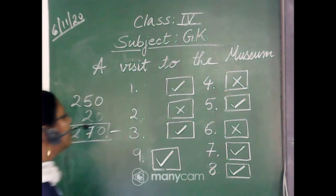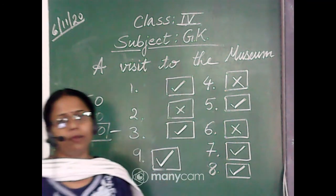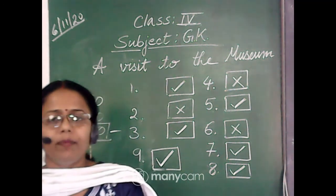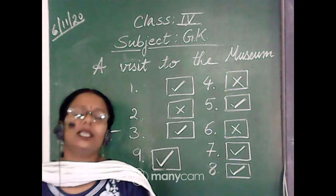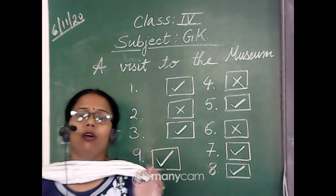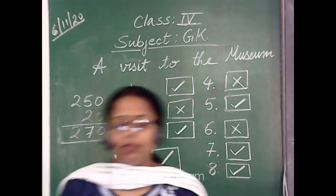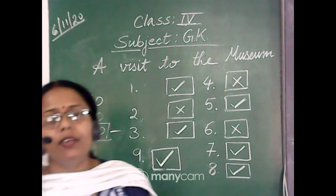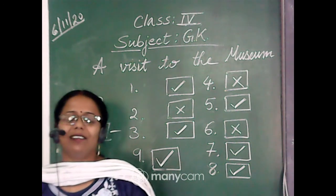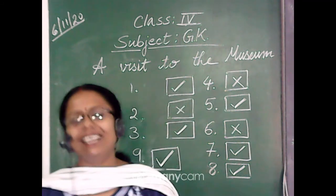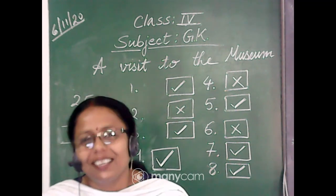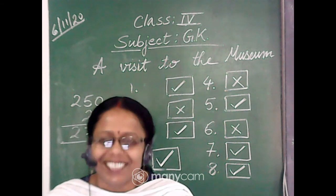So statements two, four, and six are the wrong statements; the rest are correct. In this way today we visited the museum with the help of a new activity — picture composition — which places much emphasis on your observation power and what you notice in a picture or situation. With this I conclude the class. I will be back again with a new GK class next Saturday. Till then, be happy, take care of yourself, be safe with your sanitizer and mask, and follow social distancing. Bye bye.